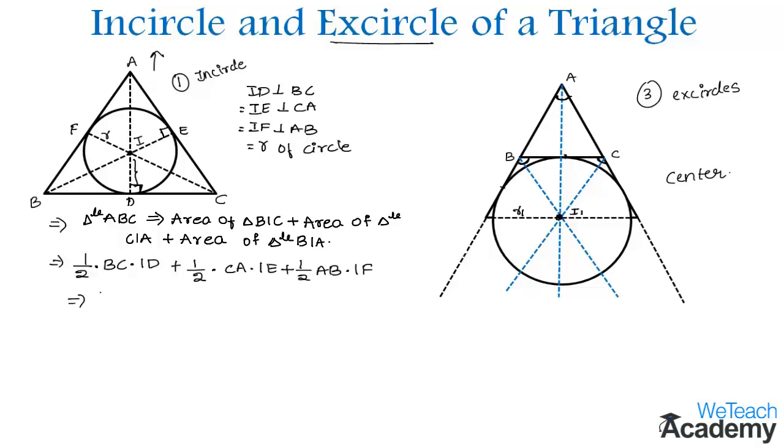This implies ½ × BC (which is a) × ID (which is R), plus ½ × CA (which is b) × R, plus ½ × AB × R. Taking ½ as the common factor, we get ½ × (a + b + c), which is 2S, times R.